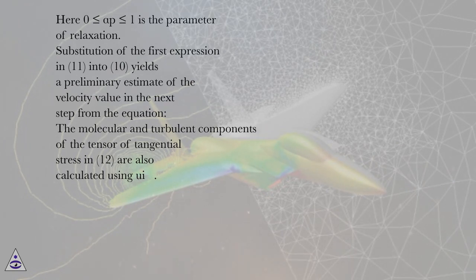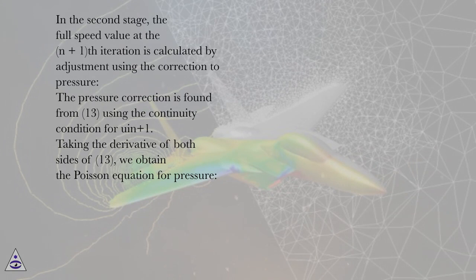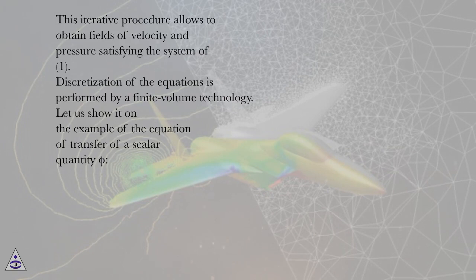The molecular and turbulent components of the tensor of tangential stress in equation 12 are also calculated using ui asterisk. In the second stage, the full speed value at the n+1-th iteration is calculated by adjustment using the correction to pressure. The pressure correction is found from equation 13 using the continuity condition for u n+1. Taking the derivative of both sides of equation 13, we obtain the Poisson equation for pressure. This iterative procedure allows to obtain fields of velocity and pressure satisfying the system of equation 1.